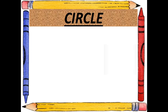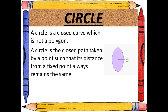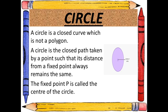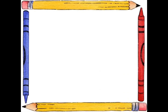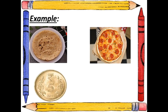What is a circle? A circle is a closed curve which is not a polygon. A circle is a closed path taken by a point such that its distance from a fixed point always remains the same. The fixed point shown in the figure is P, and P is called the center of the circle. Examples of circles are chapati, pizza, coin, moon, etc.